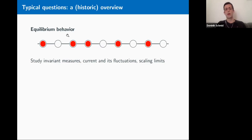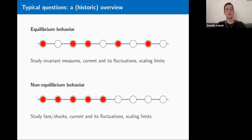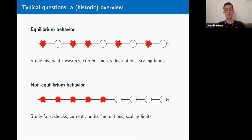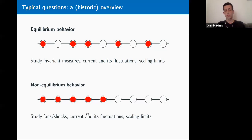When you have an idea about equilibrium behavior, a natural counterpart is to talk about non-equilibrium situations. For example, take step initial conditions where the negative integers are all occupied and the positive integers are all empty. This leads to understanding fans and shocks for TASEP. You can ask the same questions about the current, and the result — proved around 2000 — is that again we see KPZ scaling with the Tracy-Widom limit distribution.